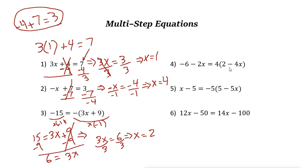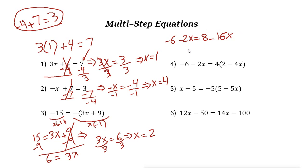Next one. Now we have variables on both sides. First, let's simplify this side because it's multiplied by 4. It is negative 6 minus 2x equals 4 times 2 is 8, and 4 times negative 4x is negative 16x. The easiest way to solve: we need to bring the variables to one side. Always choose the smaller value of the variable and move it to the other side.